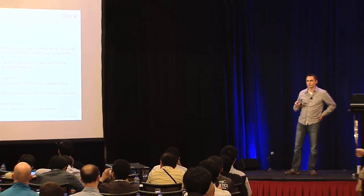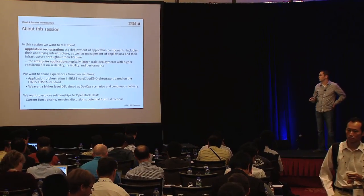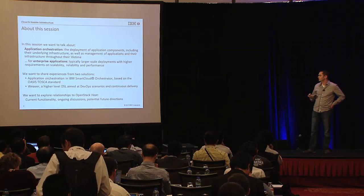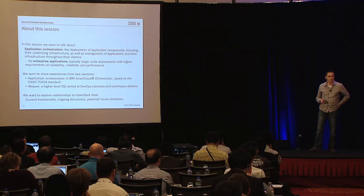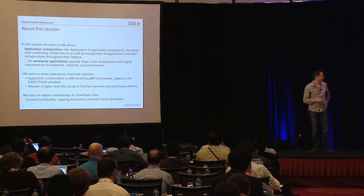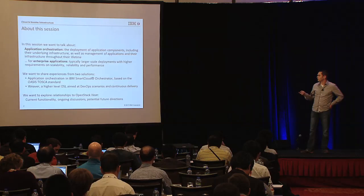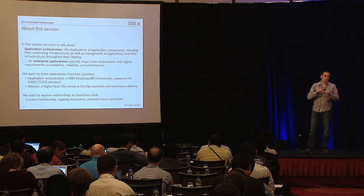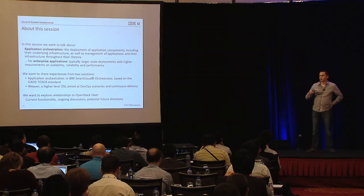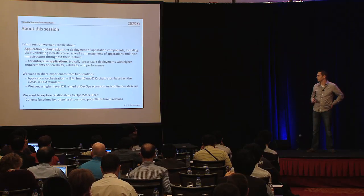When it comes to enterprise applications, it's typically large-scale deployments that have high requirements on scalability, reliability, performance, and so on. We want to share experiences in that field based on two solutions we work on in IBM: application orchestration in Smart Cloud Orchestrator, which is based on the OASIS-Tosca standard, and a project called Viva, a higher-level DSL especially designed for DevOps scenarios. We want to relate this to Heat and show what we do today in addition to what Heat does today, and outline what concepts we think are important for software orchestration in Heat.